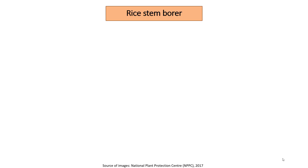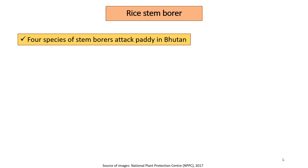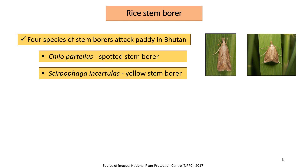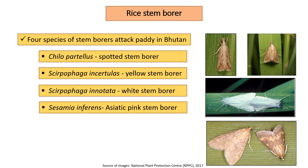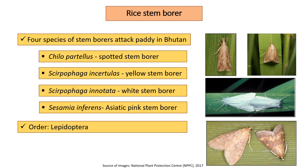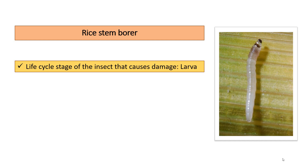Hello everyone. In this presentation we will be talking about Rice Stem Borer. Four species of stem borers attack paddy in Bhutan. They are Chilo partellus, Scirpophaga incertulas, Scirpophaga innotata, and Sesamia inferens, known as Asiatic Pink Stem Borer. They belong to the order Lepidoptera and family Crambidae.